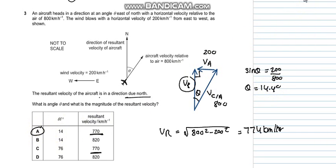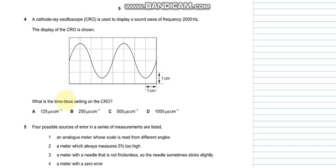The next question asks to find the time-base setting of the CRO. The frequency is given as 2000 Hertz, so the time period is 0.0005 seconds. It says to find the time-base setting on the CRO.